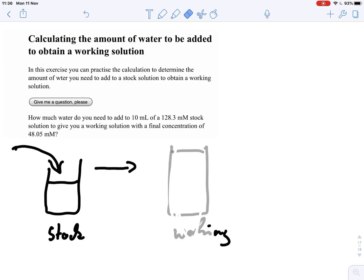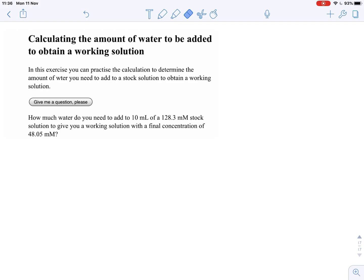So in this example here, we have a stock solution of 128.3 millimolar, and we've got 10 milliliter, and we want to convert it into 48.05 millimolar working solution. We need to figure out how much water we have to add to get this concentration.